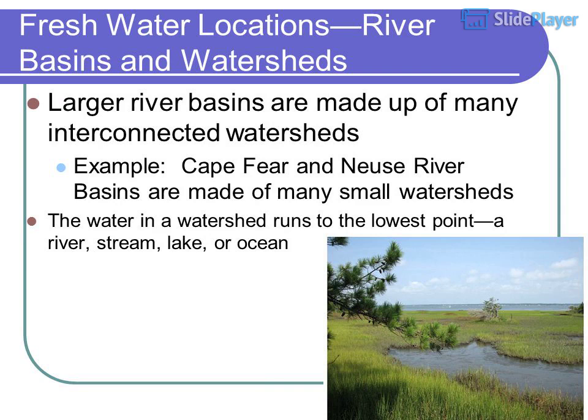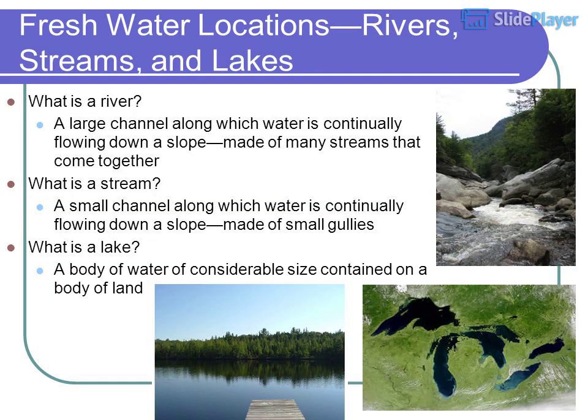Larger river basins are made up of many interconnected watersheds. For example, the Cape Fear and New River basins are made of many small watersheds. The water in a watershed runs to the lowest point — a river, stream, lake, or ocean.